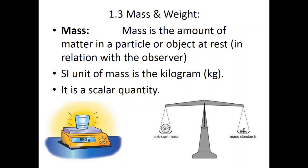Mass is the amount of matter in a particle or an object at rest in relation to the observer. If you are observing an object that is stationary, the amount of matter in that object is known as its mass. The SI unit of mass is the kilogram, symbol kg, and it is a scalar quantity, which can be measured using an electronic balance or a beam balance.